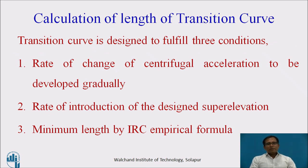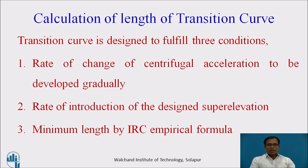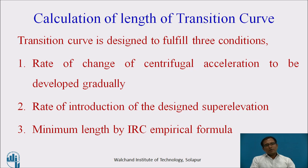To design the length of a transition curve, it has to fulfill three conditions. The first condition is the rate of change of centrifugal acceleration to be developed gradually. The second condition is introducing the super elevation gradually from normal camber to the designed super elevation. IRC has given some empirical equations to calculate the length using these empirical equations.